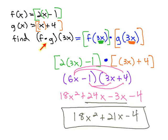Combine like terms in the middle to get our final answer of 18x² + 21x - 4 is what we get when we multiply f times g, replacing the variables with 3x.